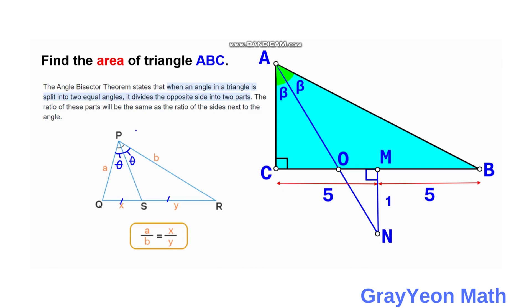As a ratio, X over Y is equal to the ratio of the sides next to them. So for the side next to X it is A, and for the side next to Y it is B. Therefore A over B is equal to X over Y.